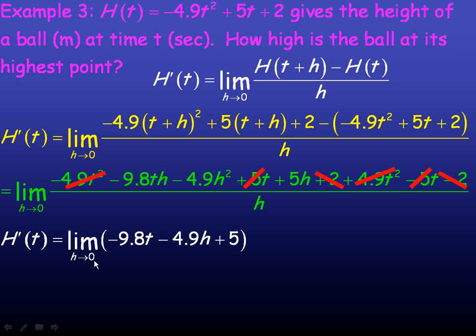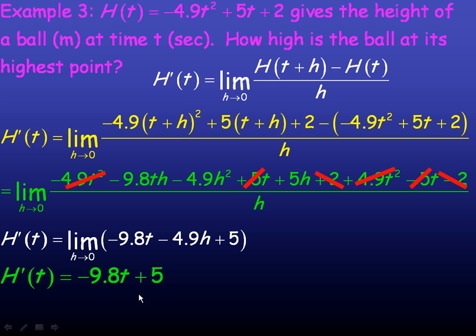Now we can take the limit as h tends towards zero, because the part on the denominator that was approaching zero is gone. So if we take the limit as h tends towards zero, this term right here becomes negligible, and so the derivative is just negative 9.8t plus 5.